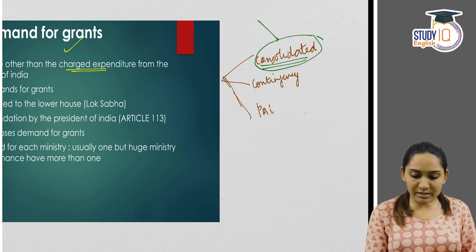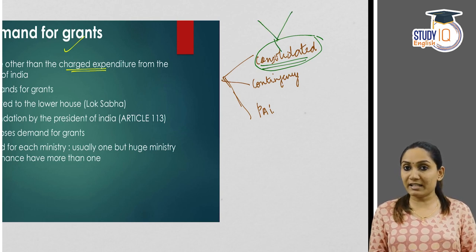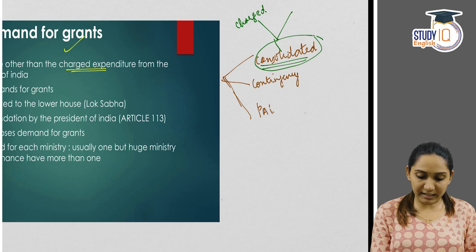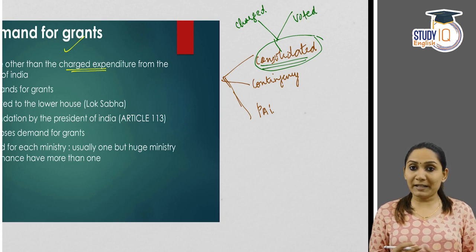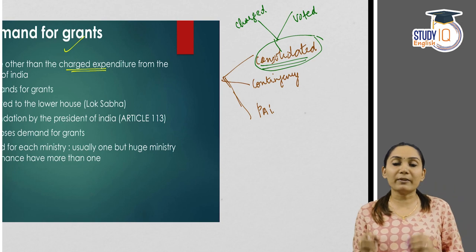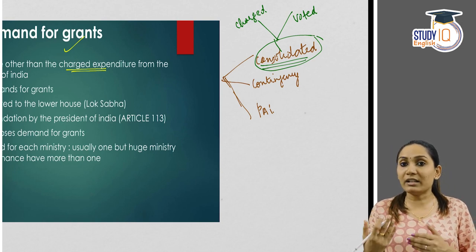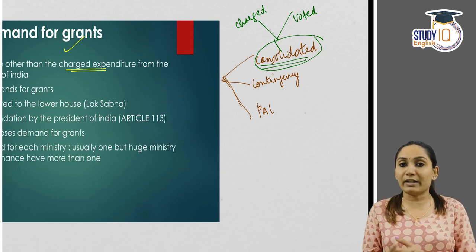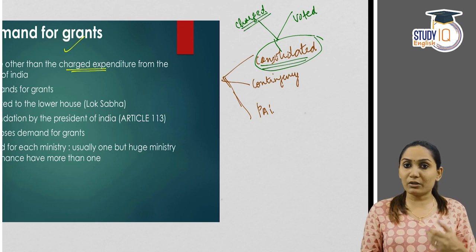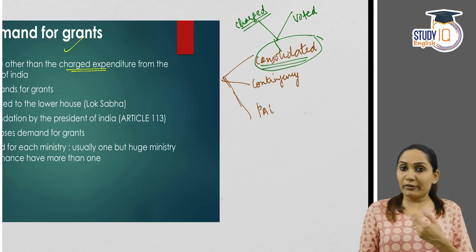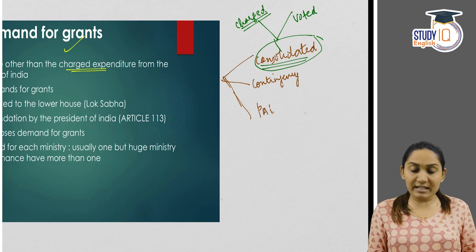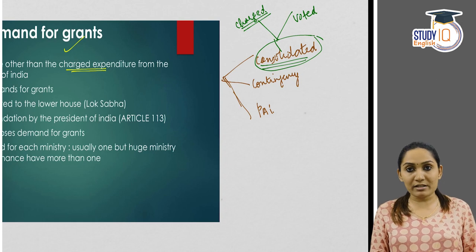From the Consolidated Fund of India, when expenditures are made, there are two kinds: charged expenditure and voted expenditure. Charged expenditure means those expenditures which are incurred from the Consolidated Fund of India but do not need the approval or vote of the parliament. For example, the salary of the President, the salary of the Chief Justice of India, etc. These are expenditures charged upon the Consolidated Fund of India for which parliament approval is not required.